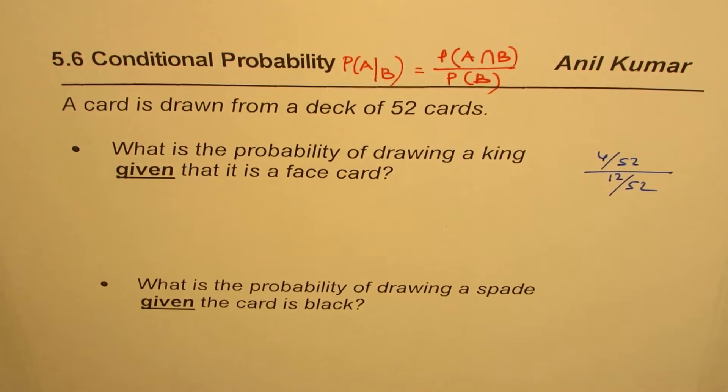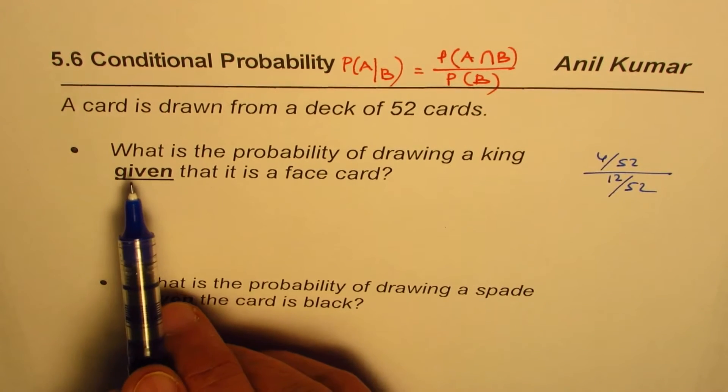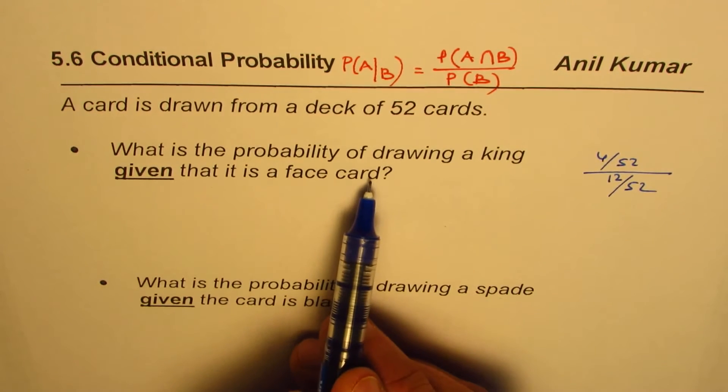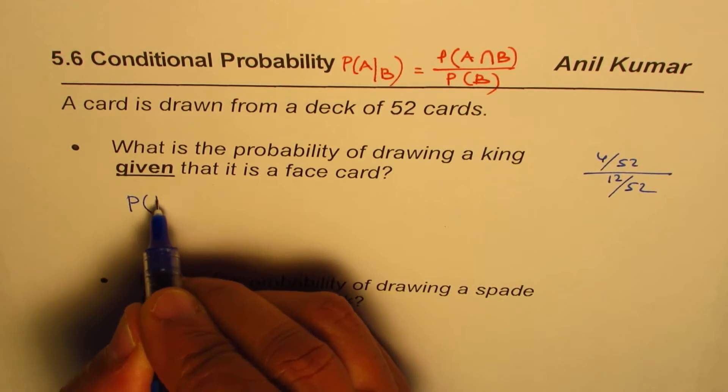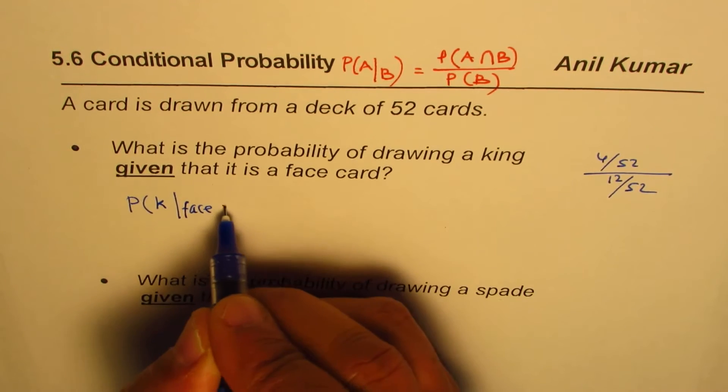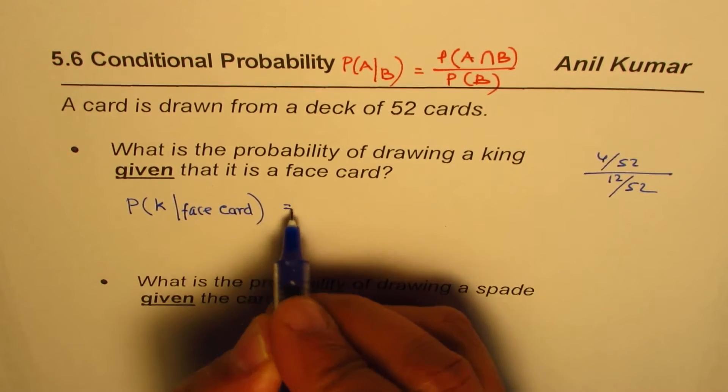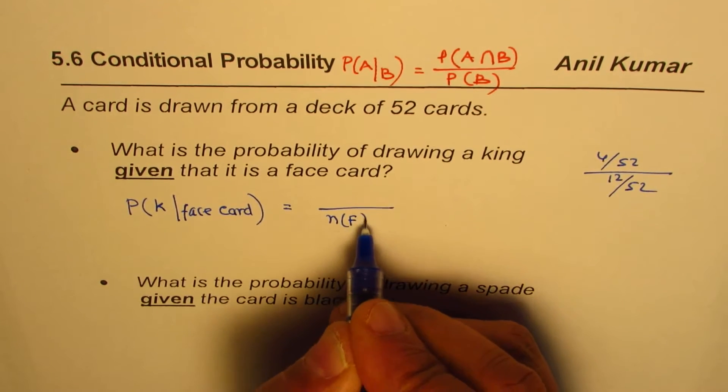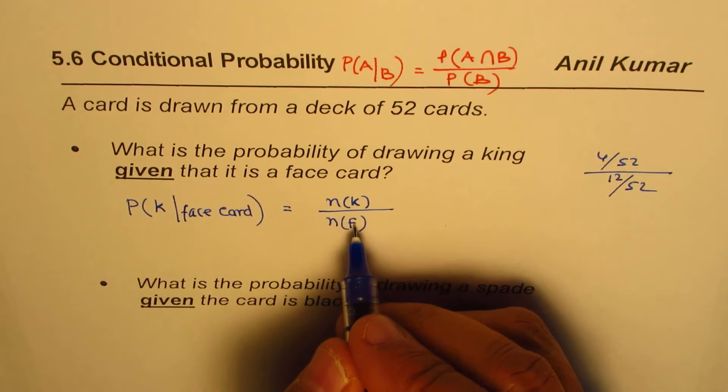And that ratio is your answer, correct. Now what I'm saying here is: the question is what is the probability of drawing a king given that it is a face card. So we are saying probability of king from face card. So we are already given a face card. How many face cards are there? Well, the number of face cards - let me write like this - number of face cards, and number of kings. Does it make sense? Because all kings are face cards.